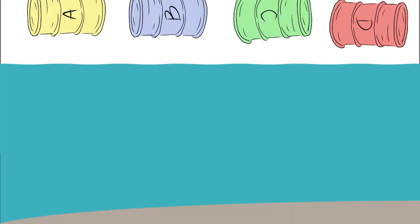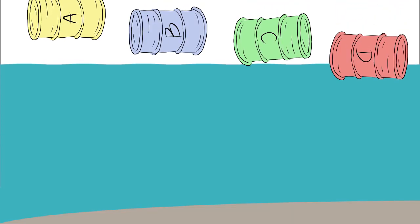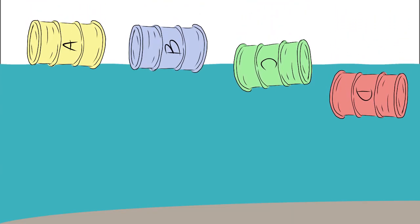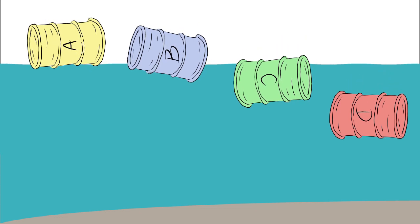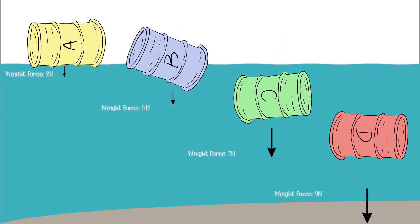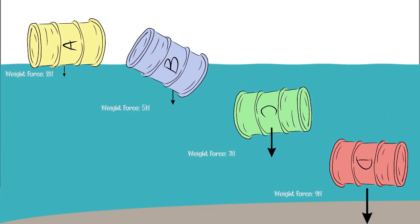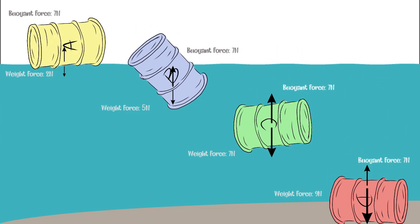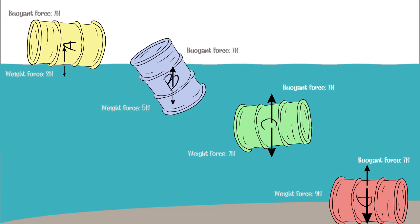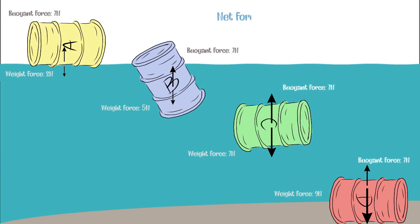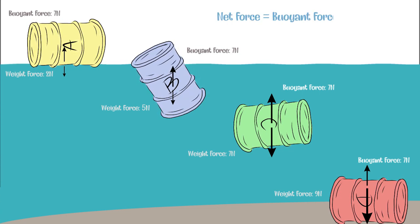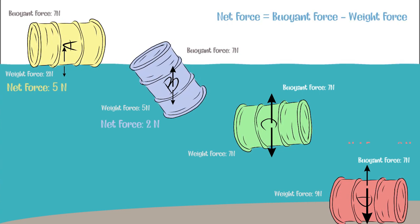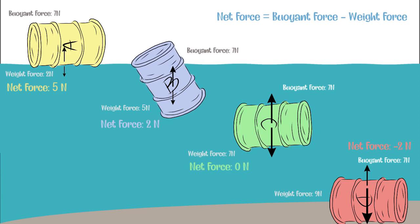If four objects are being submerged into the water at different levels, these objects are experiencing a downward force because of their weights and an upward force — that is, the buoyant force. The difference of the magnitudes of the buoyant force and the weight is the net force experienced by the object.